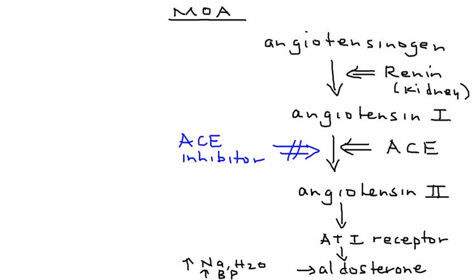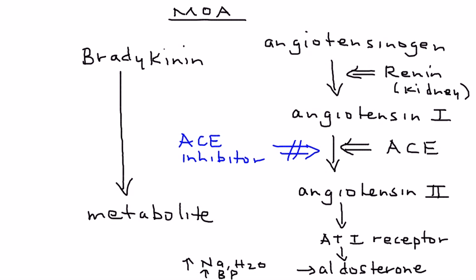There's a separate cascade on the other side that's also affected. You have a pathway involving a molecule known as bradykinin, and normally it breaks down into a metabolite with the help of angiotensin-converting enzyme.